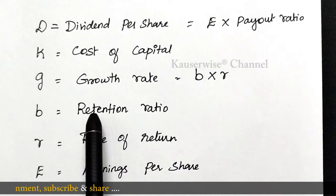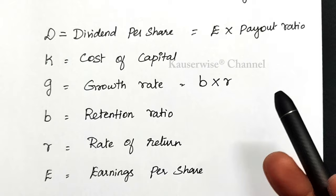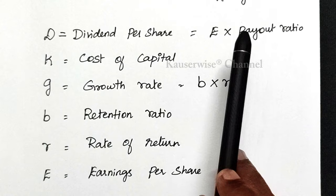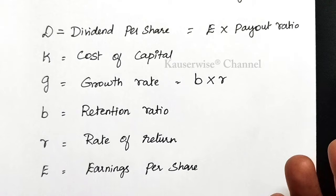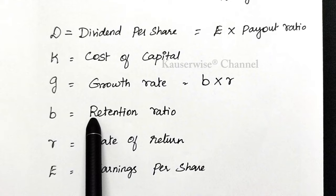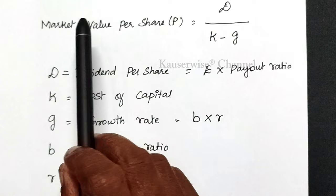What is retention ratio? After finding the earnings available to shareholders, the company decides whether to declare the entire amount as dividend or to retain some proportion — that decision is called dividend policy. For example, if earnings per share is 100 rupees and the company declares 70% as dividend, the remaining 30% is called retention ratio. The 70% declared is called the payout ratio. E refers to earnings per share. These are the components required to find market value per share according to Gordon's model.